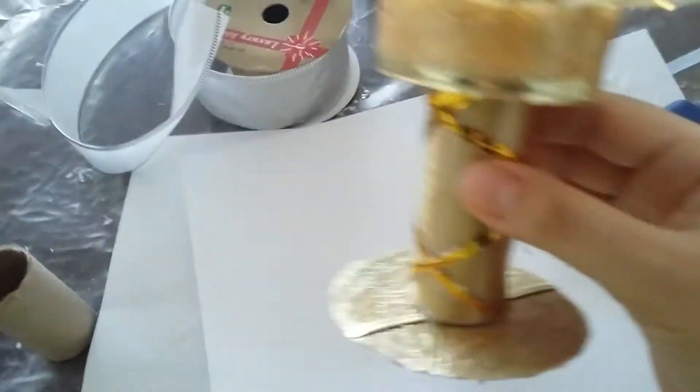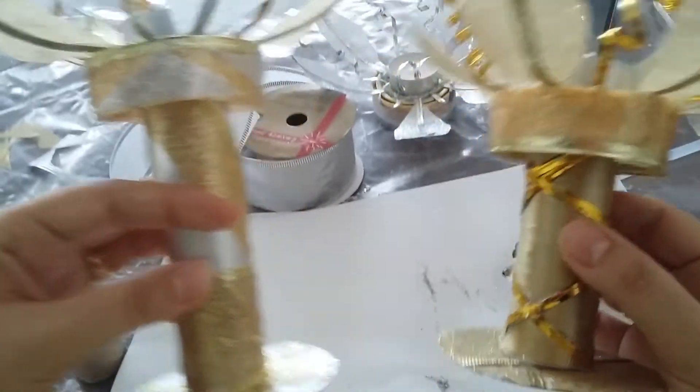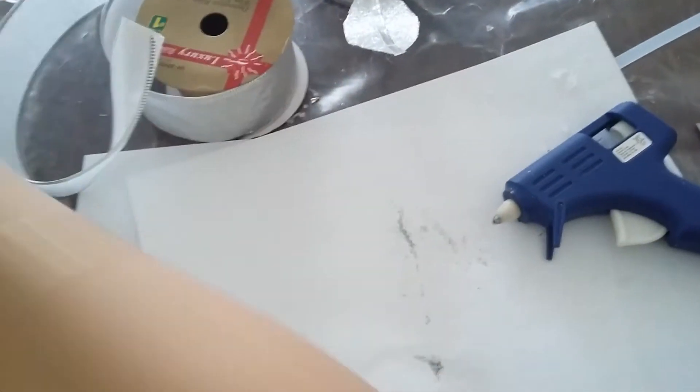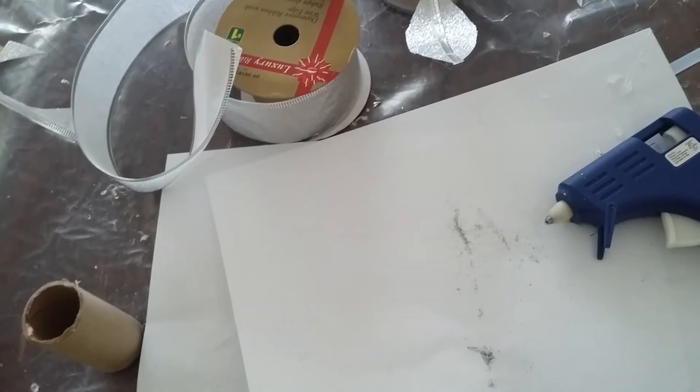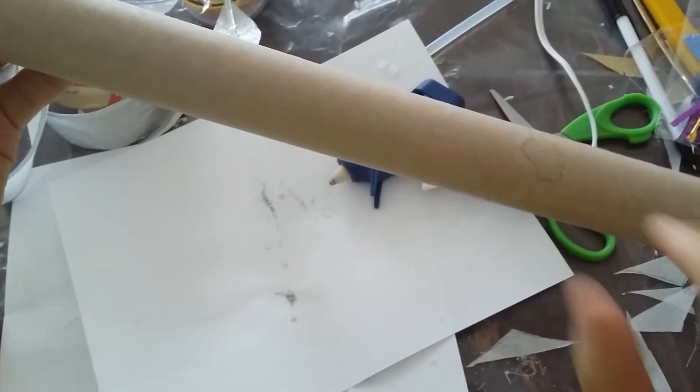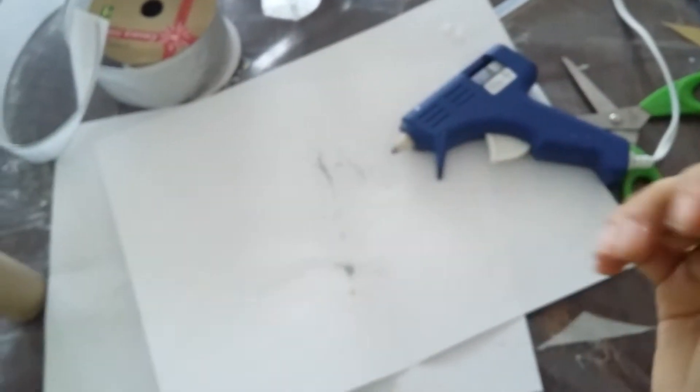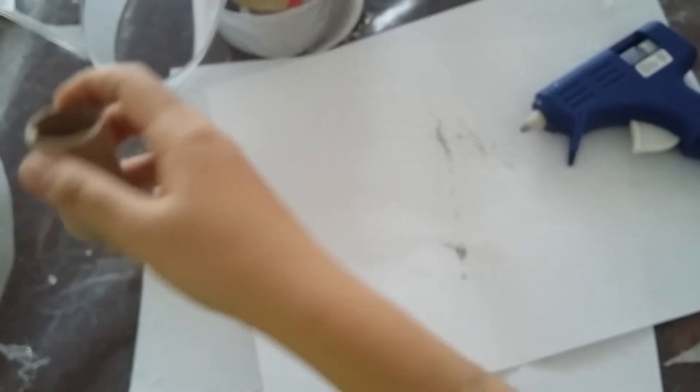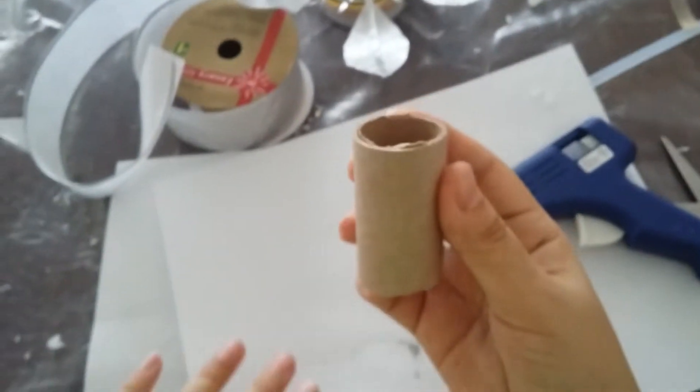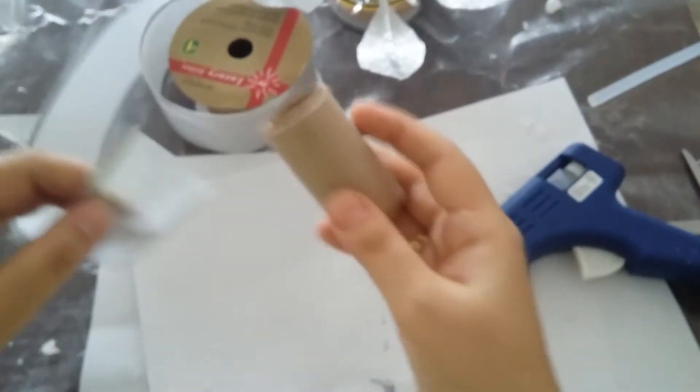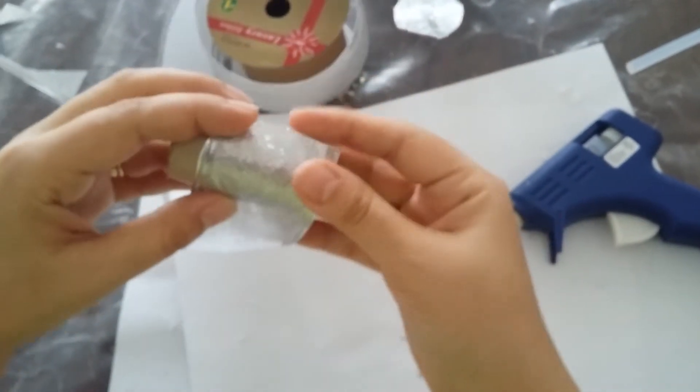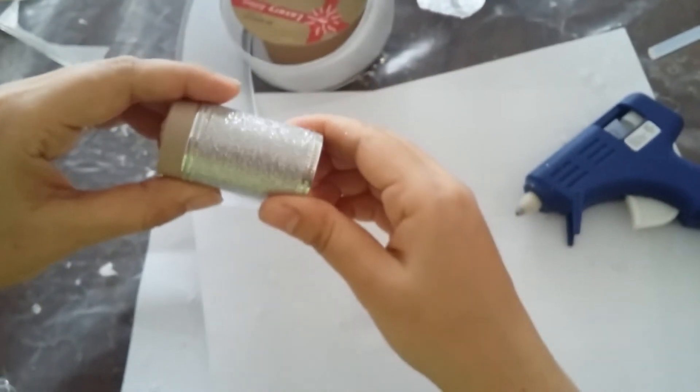So now I will cut from this, this, I will cut from it. Okay. This roll. And I already cut the small part like this. And I will surround it with this silver ribbon. Okay. So.